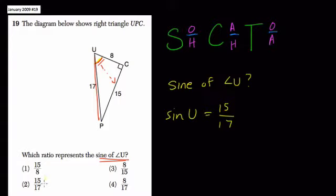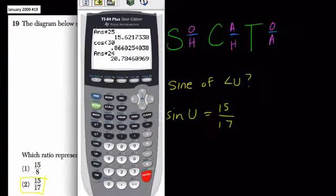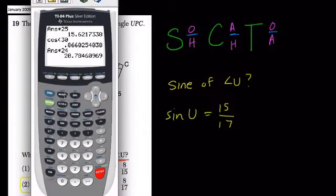And here, the answer is 2. If you want to find the angle, you've got to use the calculator here to say second sine. In other words, what angle would give us the ratio of 15 over 17, and we would get about 61.9 degrees.